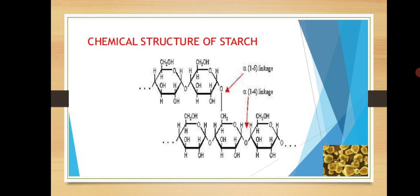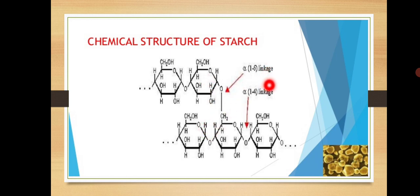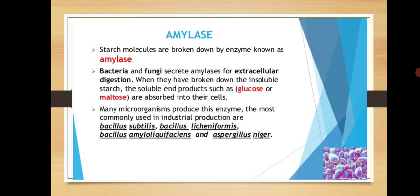The two important components of starch are amylose and amylopectin, which we have already discussed in the synthesis part. The structure of starch is made up of glucose units joined together by alpha-1,4 linkage. Since starch is a branched molecule, the two branches are joined together by alpha-1,6 linkage, where position 1 and position 6 are involved.